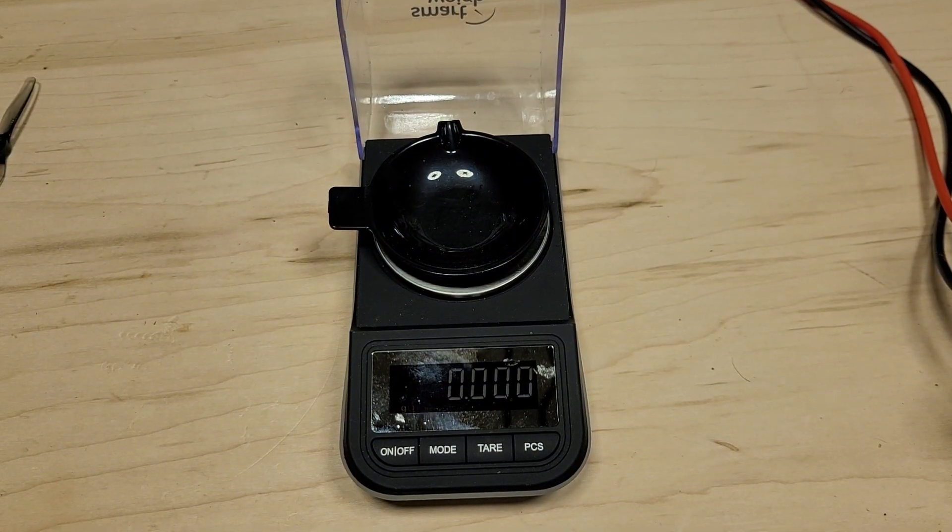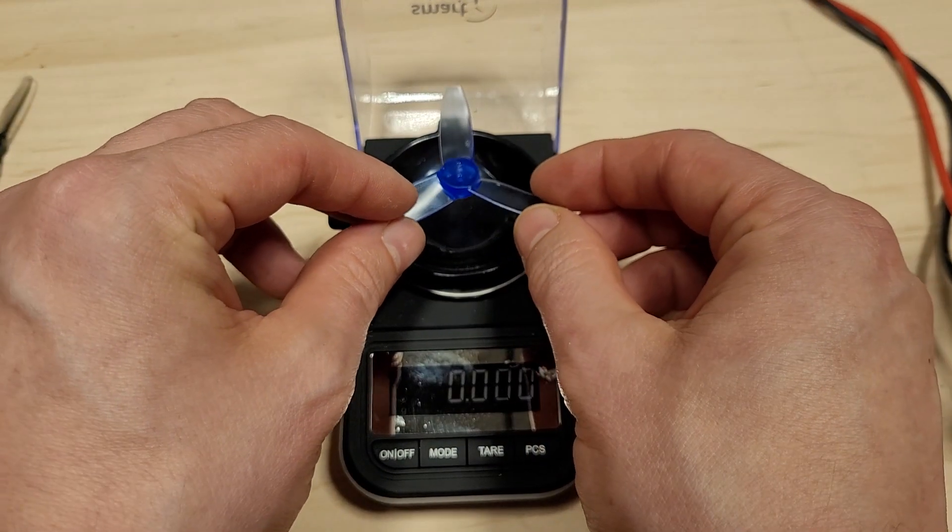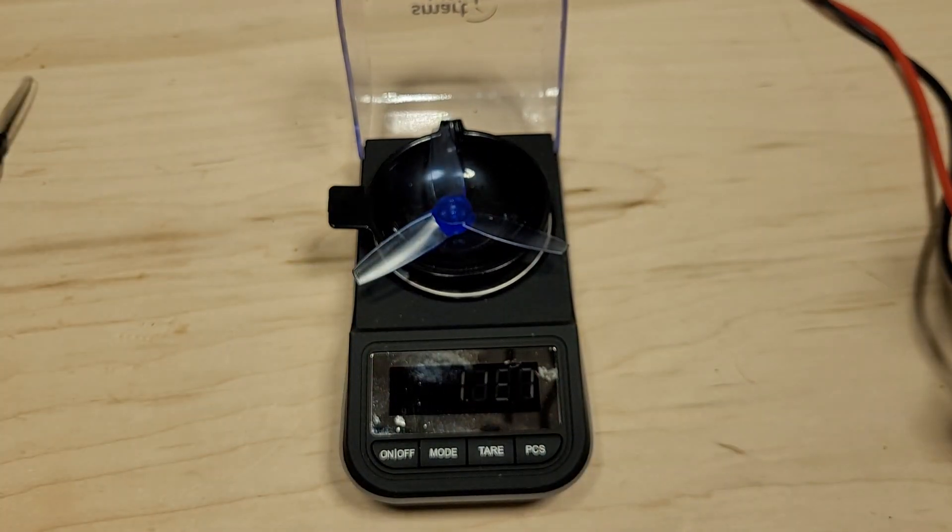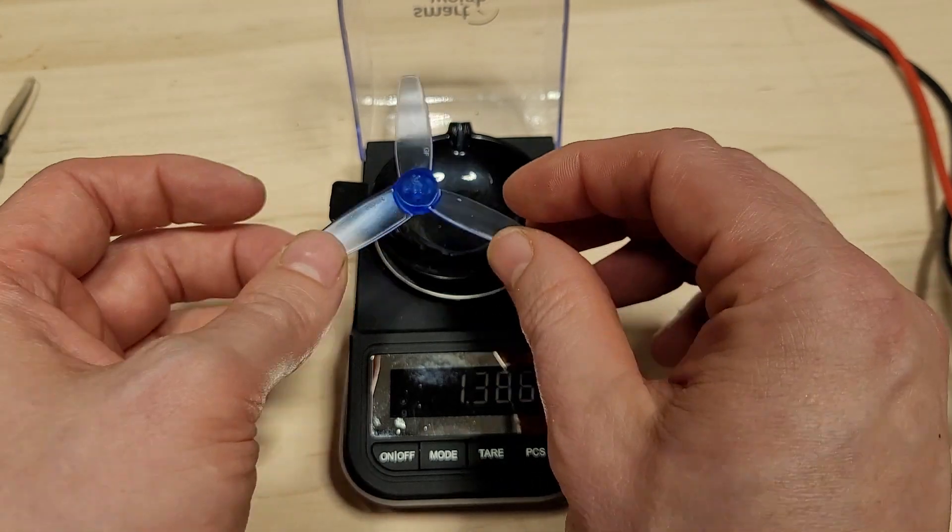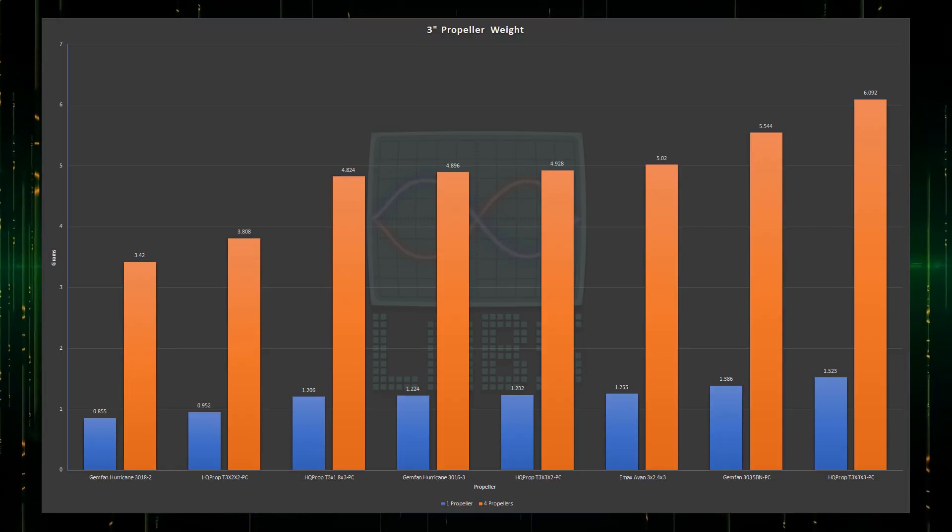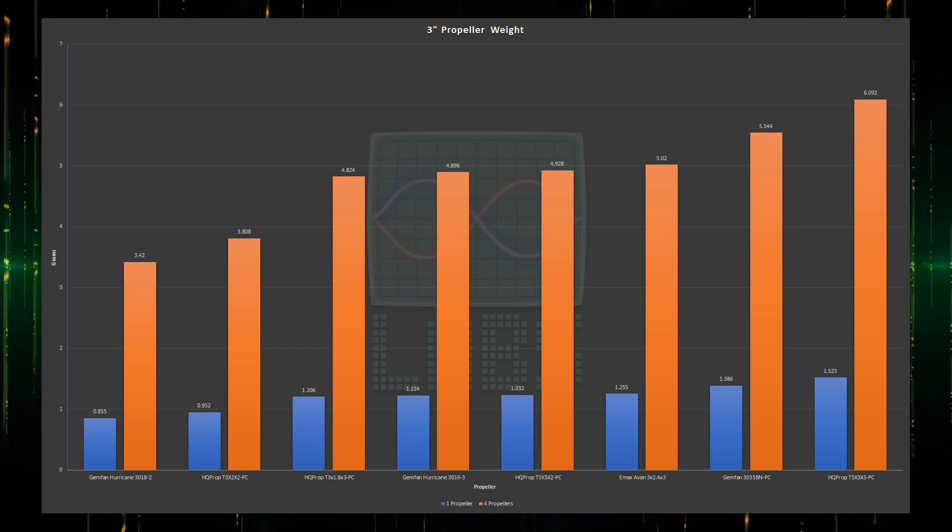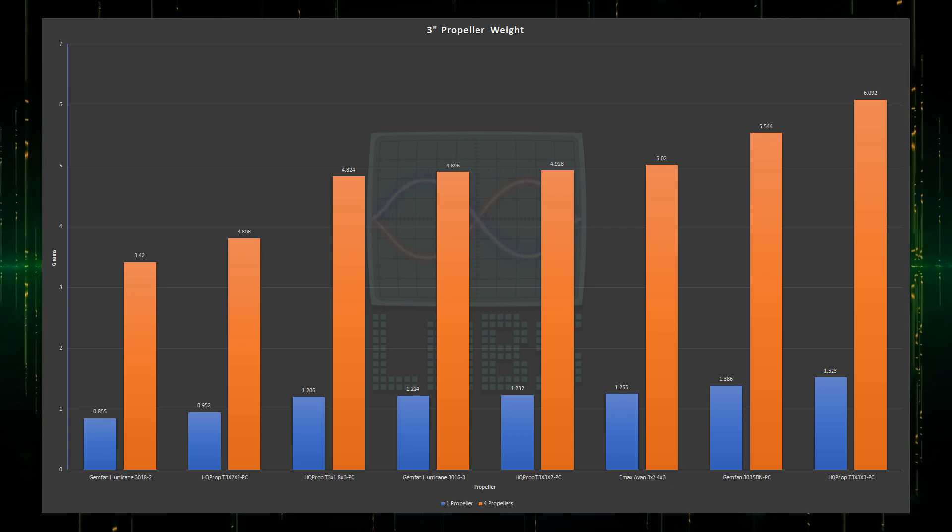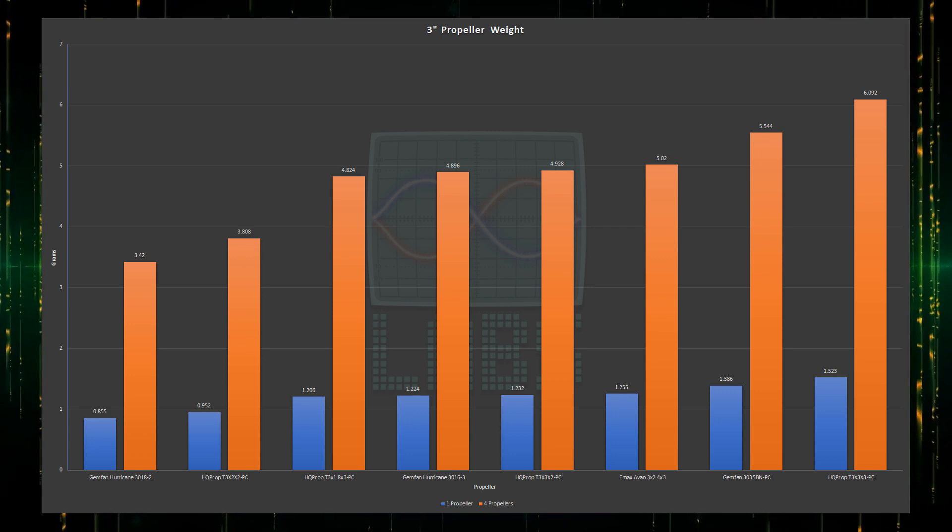Like all battles first we must weigh in the contenders. To do this I used a high precision scale accurate to 0.001 grams. Propeller weight is not irrelevant as inertia does exist and with small aircraft every gram matters. This chart shows the weight of each propeller alongside four of them. The Gemfan Hurricane is the lightest of the two-blade propellers and the Emax AVAN propeller is the lightest of the three blade high-pitched propellers, near parity with the two blade HQ Prop 3-inch pitch propeller.